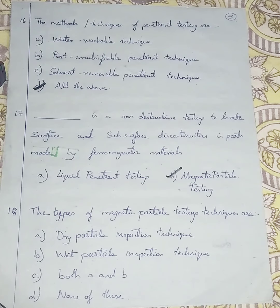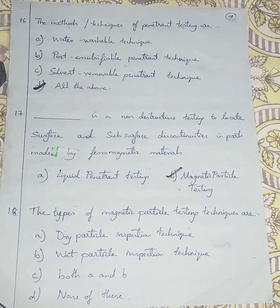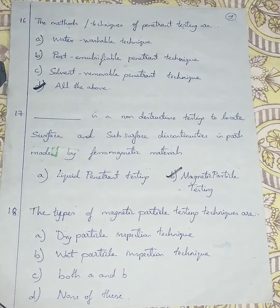Question number 18: What are the types of magnetic particle testing techniques? Option A is dry particle inspection technique, Option B is wet particle inspection technique, Option C is both A and B, Option D is none of these. Magnetic particle testing is of two types: dry magnetic particle testing and wet particle inspection technique. So I am going with Option C - both A and B.